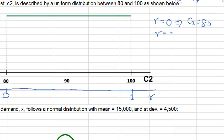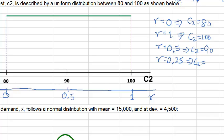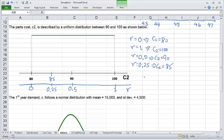What if the random number happened to be exactly 1? That would correspond to C2 of 100. Now here's a tough one. What if r is exactly 0.5? Then what is C2? Well that must be halfway between 80 and 100. When r is 0.5, the parts cost should equal 90. What about r equals 0.25? That's halfway between 0 and 0.5, so that's halfway between 80 and 90. Must be 85.